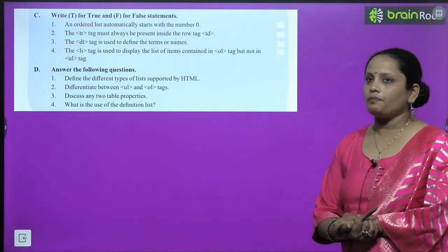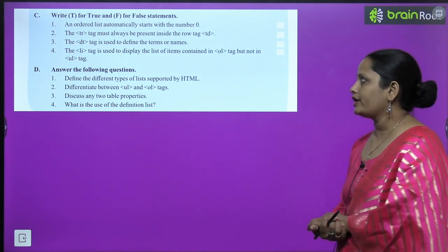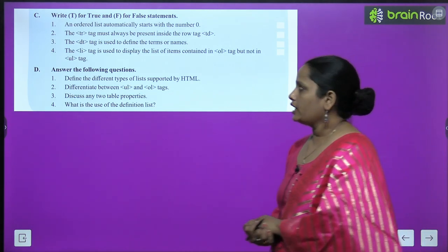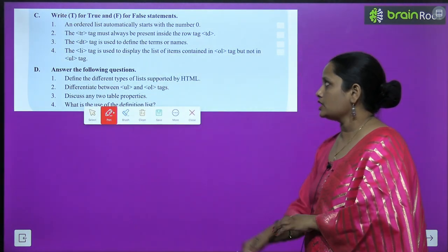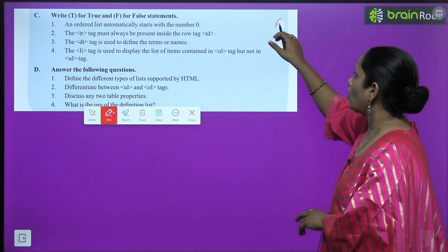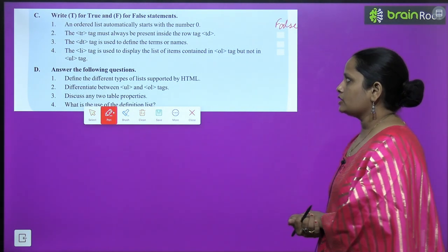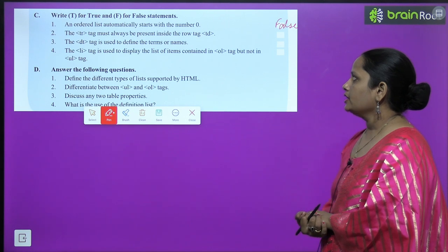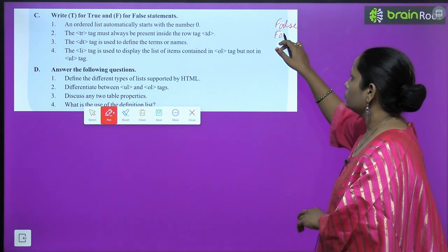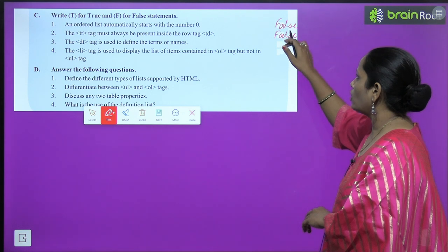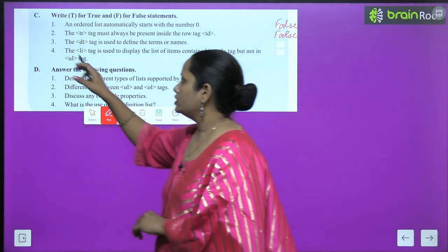Next, part C — write true or false for the following sentences. First: an unordered list automatically starts with number 0 — this is false. Second: the TR tag must always be present inside the row tag TD — this is again false. The rest two children you have to do yourself.